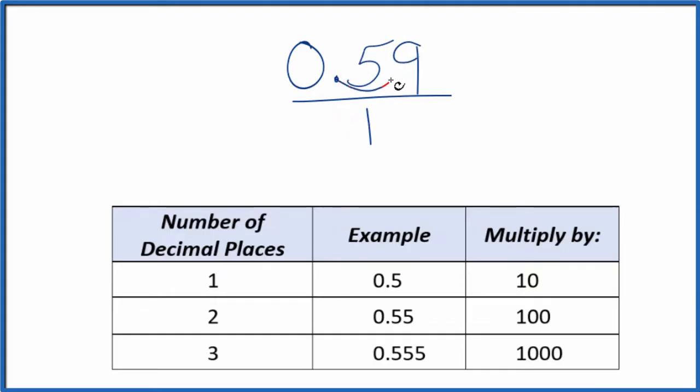And I see I have two decimal places. If I have two decimal places, I'm going to multiply that by 100.